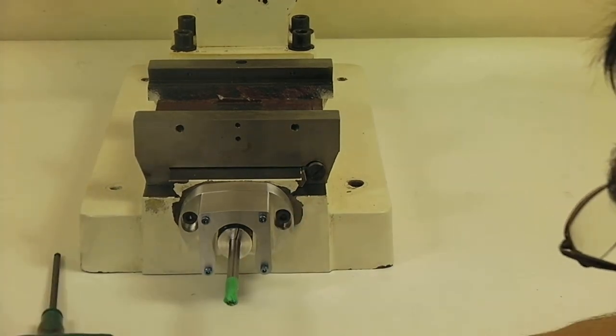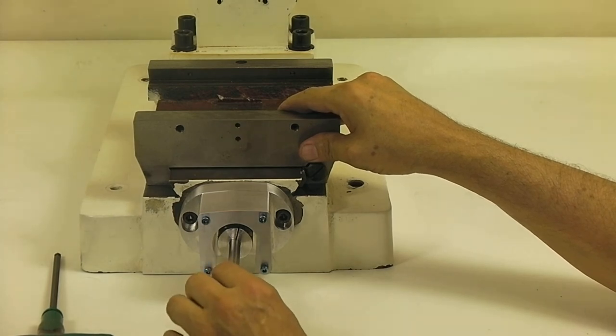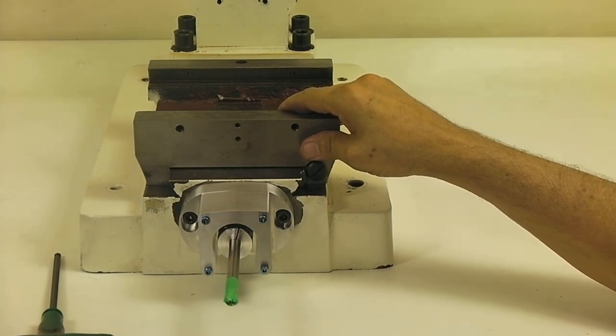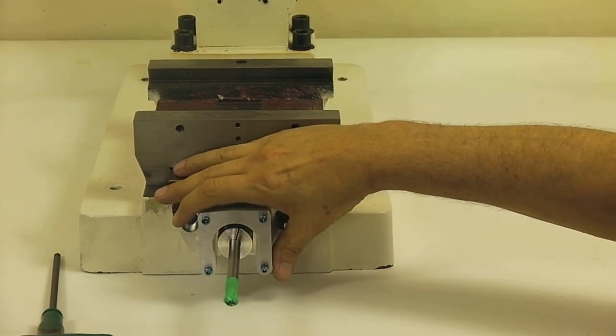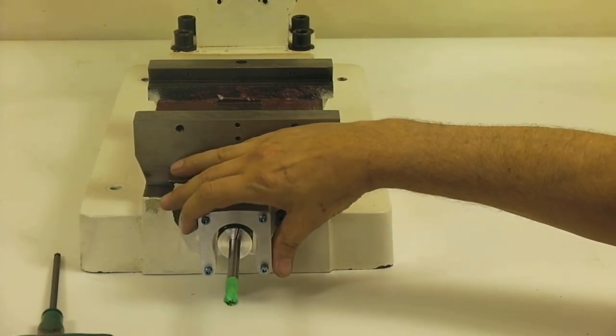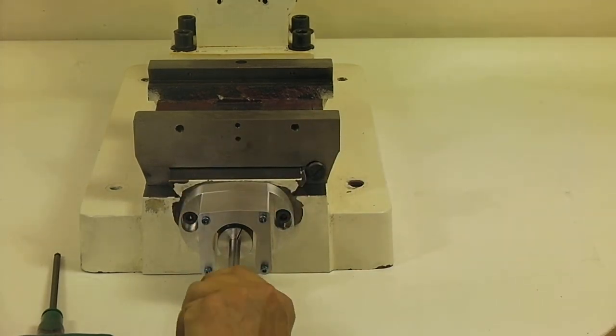We're going to say that's installed. You'd want to run it back and forth all the way, by hand, to see if you have any binding. You can tell by, if you loosen these bolts when it's all the way forward, if it moves to one side or the other, then you're bending the screw. The other way is the ball screw just plain makes more noise and takes more force when it's binding.